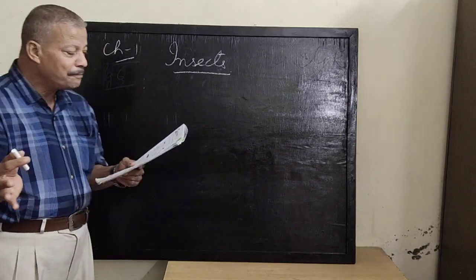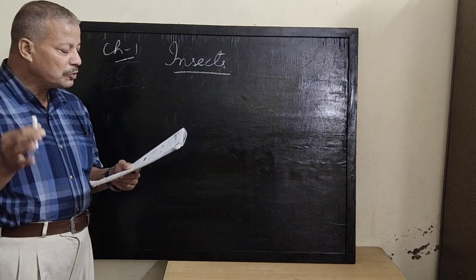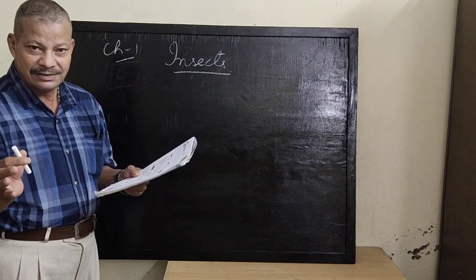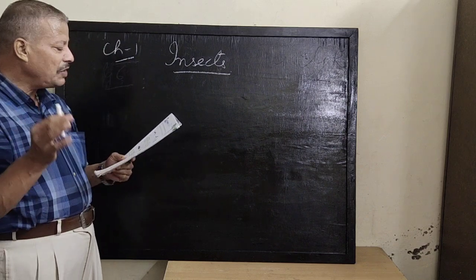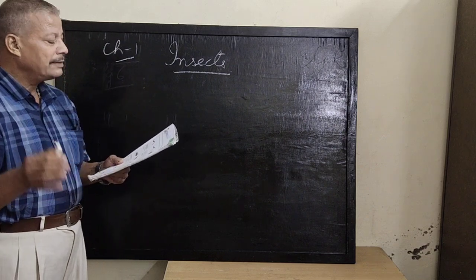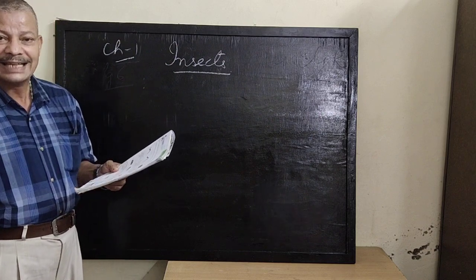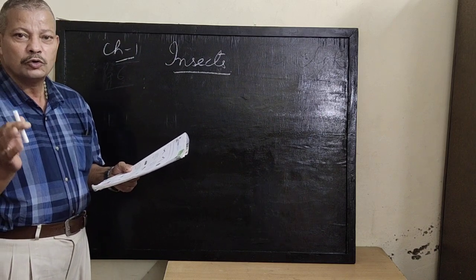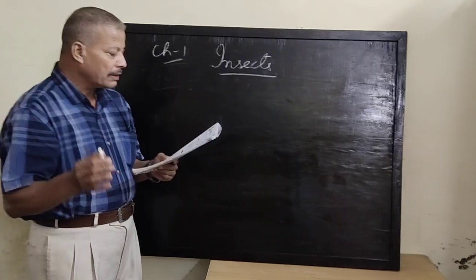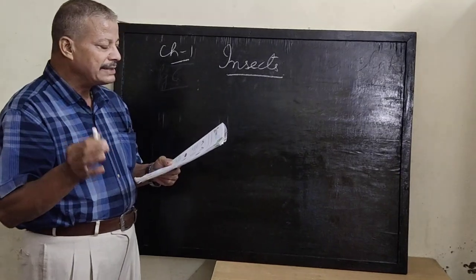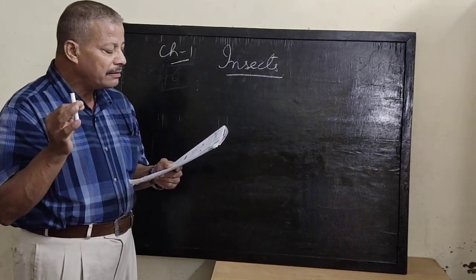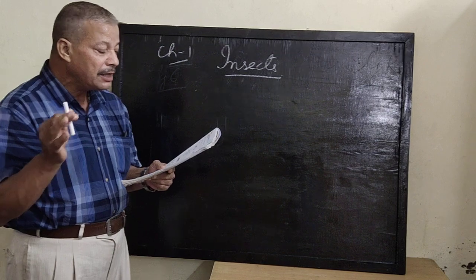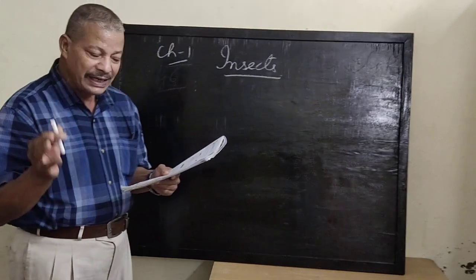Good evening, children. I am going to start with the first chapter: Insects. As we all know, insects have six legs and one or two pairs of wings. There are six to ten million species of insects.